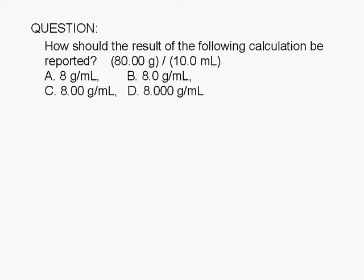How should the result of the following calculation be reported? 80.00 grams divided by 10.0 milliliters. Should it be reported as 8 grams per milliliter? 8.0 grams per milliliter? 8.00 grams per milliliter? 8.000 grams per milliliter?